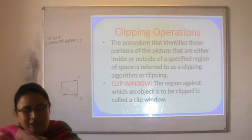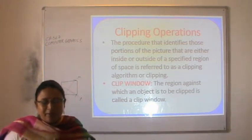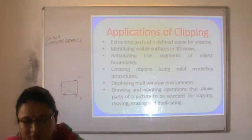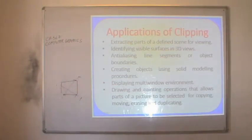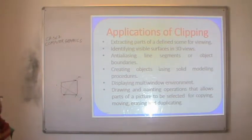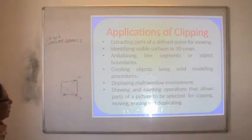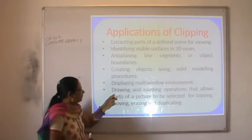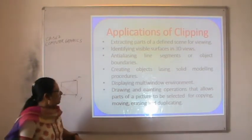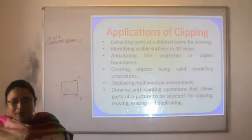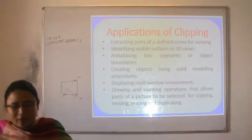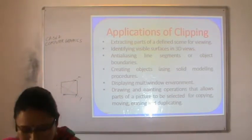There is a clip window. The region against which an object is to be clipped is called a clip window. There are different applications of clipping: extracting parts of a defined scene for viewing, identifying visible surfaces in 3D views, anti-aliasing line segments or object boundaries, creating objects using solid modeling procedures, and displaying multi-window environments. It is also applicable in drawing and painting operations that allow parts of a picture to be selected for copying, moving, erasing, and duplicating.